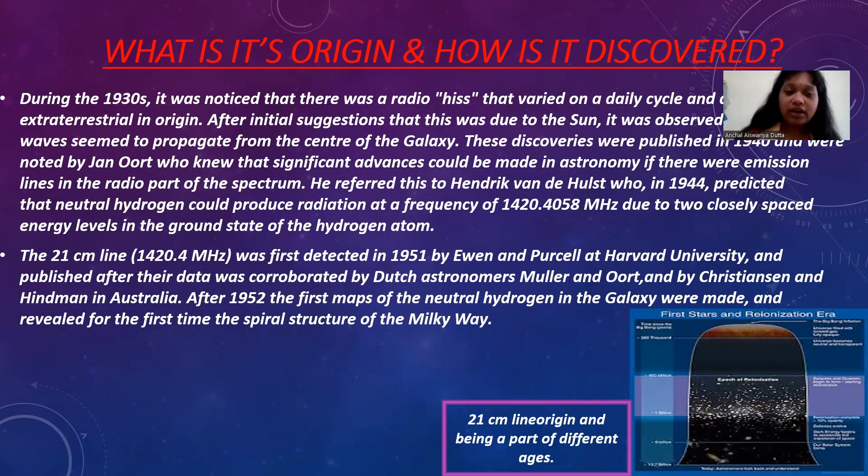The existence of the 21 centimeter line was first predicted theoretically by Dutch astronomer Hendrik C. van de Hulst in 1944 during World War II. He recognized that the energy transition associated with the electron spin flip in a hydrogen atom could result in the emission of radio waves at a very specific wavelength, which corresponds to about 21 cm.